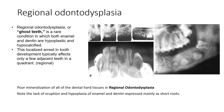Regional odontodysplasia, also called ghost teeth, is a rare condition in which both enamel and dentine are hypoplastic and hypocalcified. There is a localized arrest in tooth development typically affecting only a few adjacent teeth in a quadrant, hence the term regional odontodysplasia. The radiograph shows poor mineralization of dental hard tissue structures, lack of eruption, and hypoplasia of enamel and dentine expressed mainly as short roots.